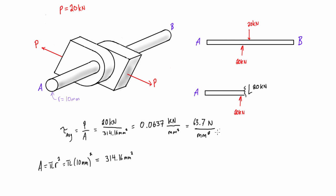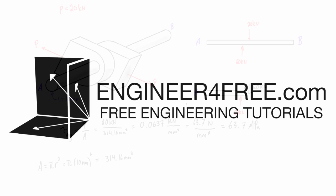So this is just 63.7 megapascals and that is the average shear in this rod between these two connections that are pulling in opposite directions.